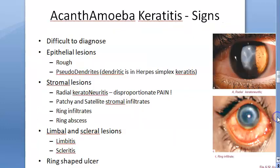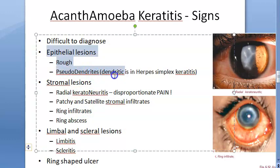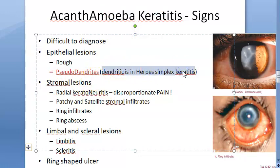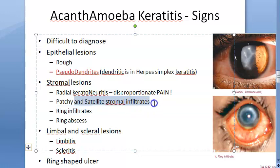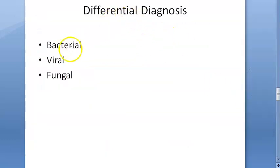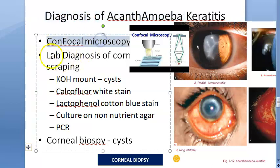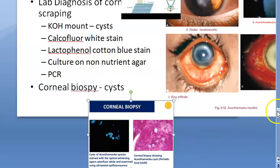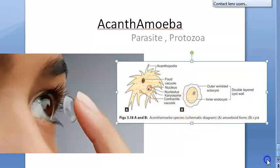Signs of acanthamoeba keratitis: pseudodendrites (distinguish from dendritic ulcer in HSV and micro-dendritic in herpes zoster), radial keratoneuritis, ring infiltrates/ring abscess, satellite stromal infiltrates, limbitis, scleritis, ring-shaped ulcer. Diagnosis: confocal microscopy, KOH mount, lactophenol cotton blue staining, PCR, corneal biopsy looking for cysts.